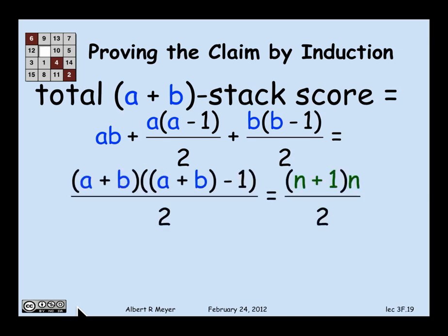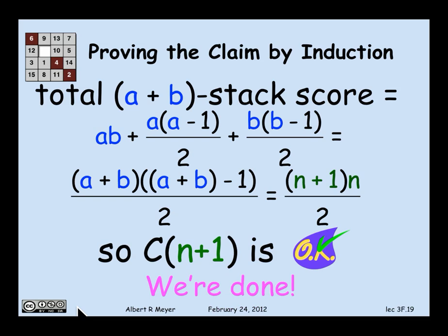So you simplify that to organize it so it's (a+b)(a+b-1)/2, which is exactly (n+1)n/2, which is what we were trying to prove. We've proved claim(n+1). The inductive step is complete. And indeed, we've proved that no matter how big the stack is, your score comes out the same.